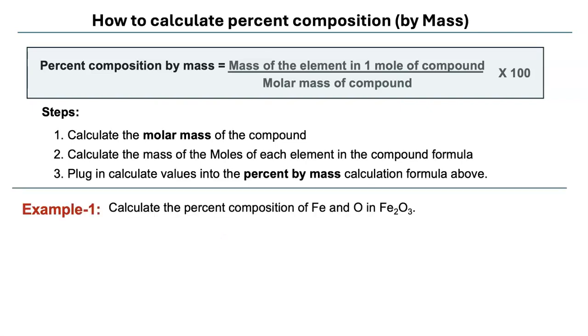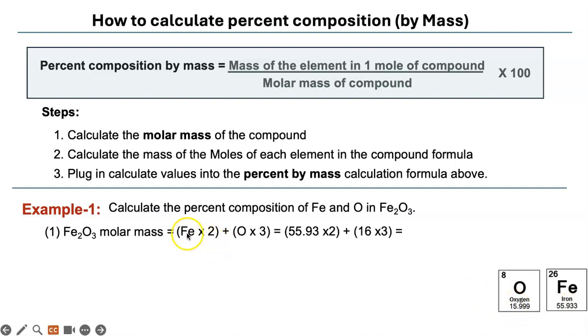Here's an example: calculate the percent composition of iron and oxygen in Fe2O3, this is iron oxide. You are first going to find the molar mass. Iron is 55.93 and oxygen is 16 grams per mole. So you have two moles of iron, just like we did in the mass to moles conversions. This is iron mass times two and oxygen mass times three.